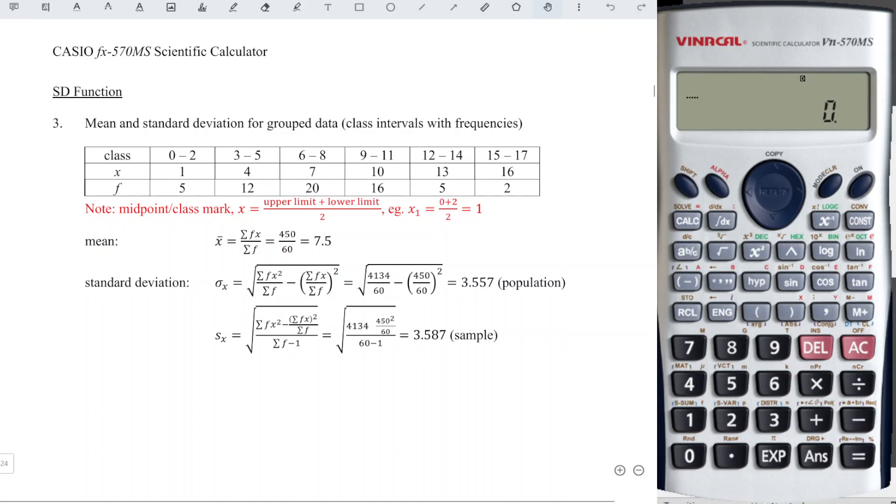Next, we press mode for two times to get the SD function. Then we just have to input the data according to x semicolon f, which means that for the first class, we have 1.